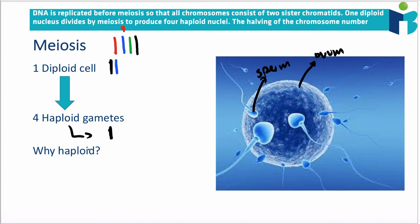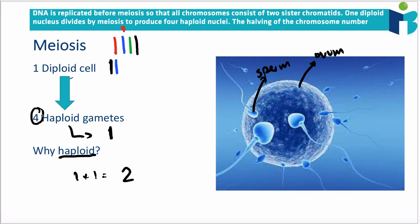Why is it necessary to form haploid gametes? If we want to combine two gametes to form a normal new cell or organism, we need to end up with a diploid cell, because that's how many versions of chromosomes humans have. Therefore we need haploid cells — one plus one makes two. Each gamete has only half the genetic material, so when they come together they make a whole. In the process of forming these gametes, we take one diploid cell and form four haploid cells.